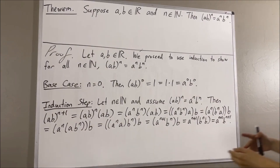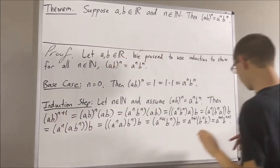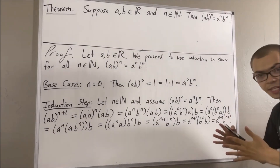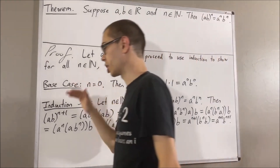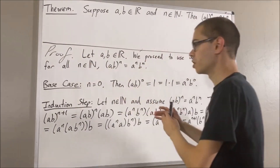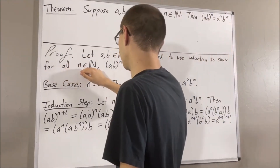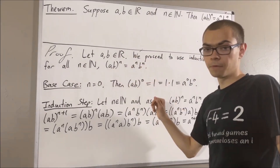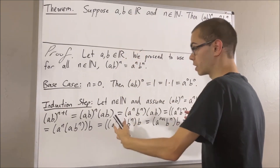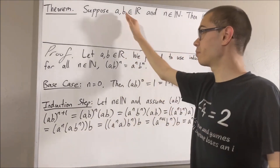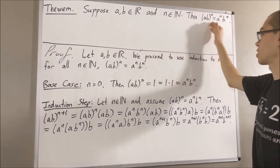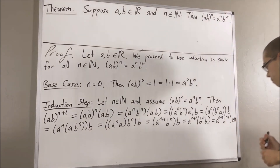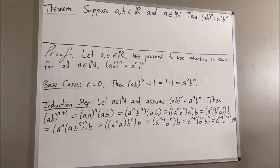So what we have shown is that AB to the power of n plus 1 is equal to A to the power of n plus 1 times B to the power of n plus 1. This completes the induction step. Because we've completed both the base case and the induction step, this closes the induction. So we have proven for all natural numbers n, AB to the power of n is equal to A to the power of n times B to the power of n. This completes the proof.